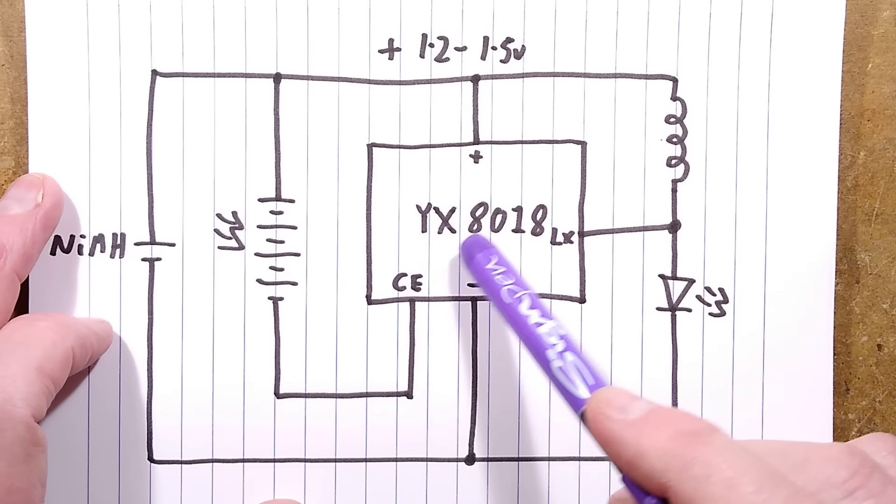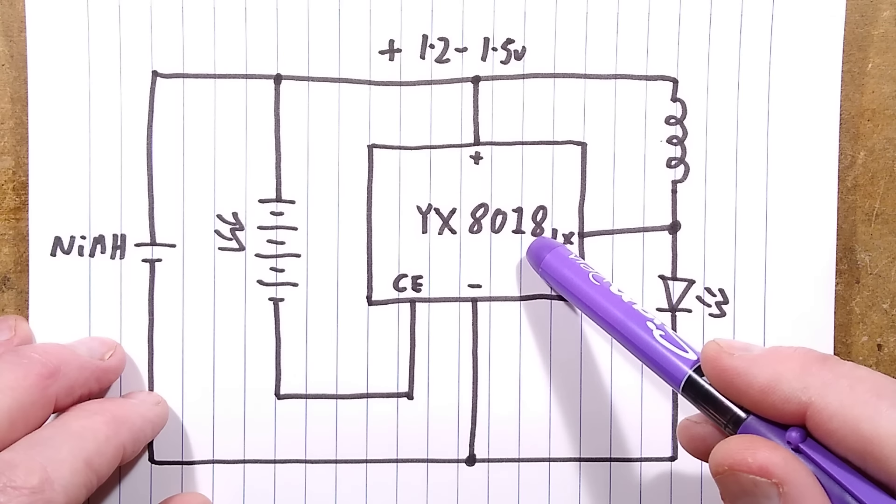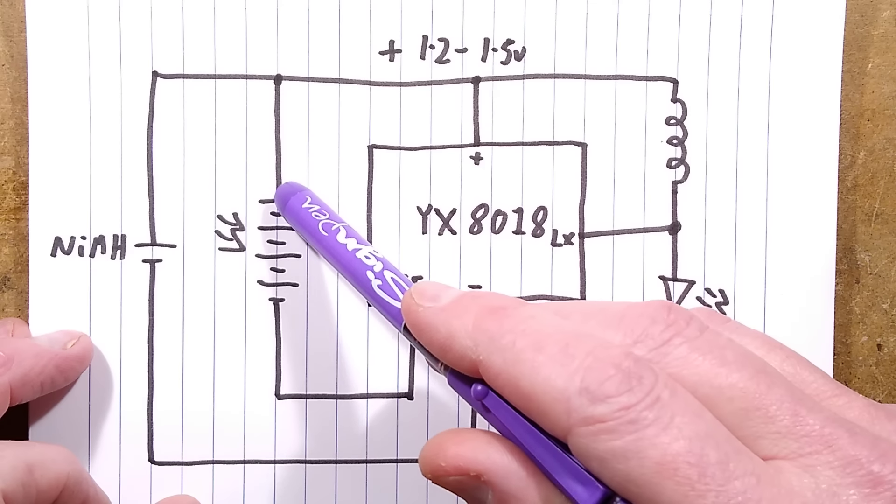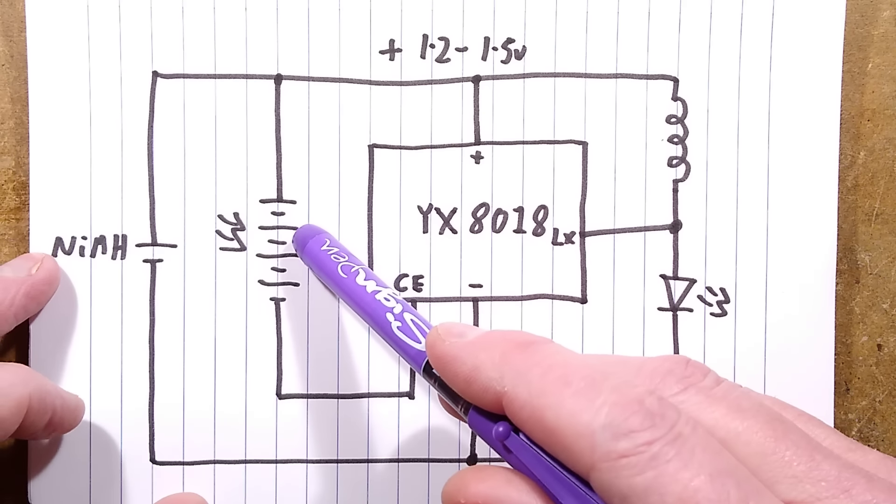So here's the classic YX8018, which is what this unit's using. It's a four-pin solar light chip, and it's got this solar panel here which has four sections, giving 0.5 volts per section, so typically about 2 volts.